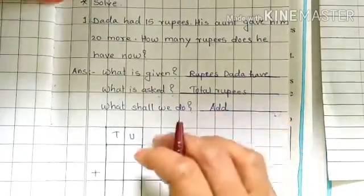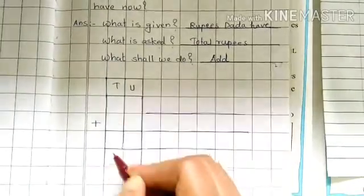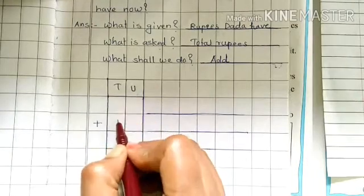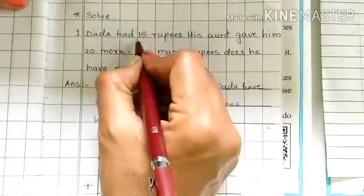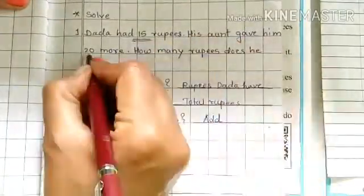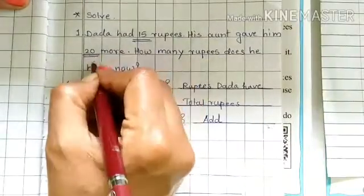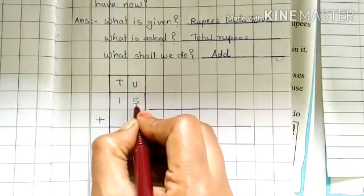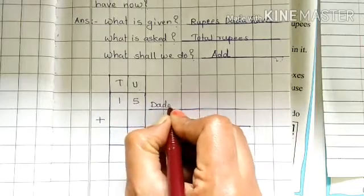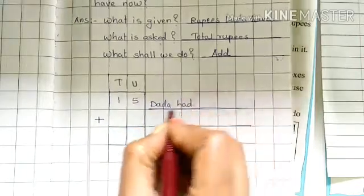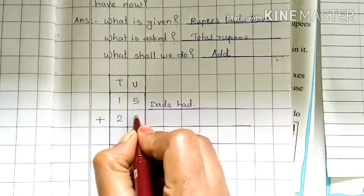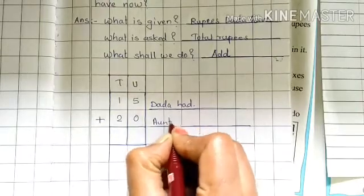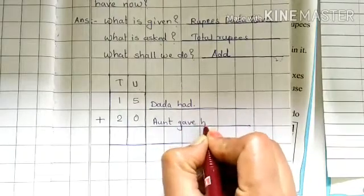Now after writing this, that 10 units box you have to draw here, down. 10 units. Now for writing 10 units, we got two numbers here. One is 15 rupees and the other is 20 rupees. So we have to add these two numbers. 1 ten, 5 unit, 15. This 15 rupees Dada had. Plus 20, 2 tens, 0 unit, 20. Aunt gave him.